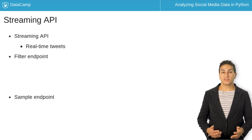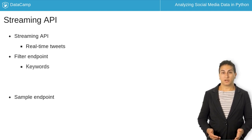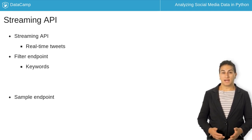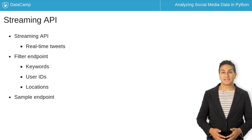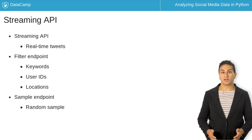With the filter endpoint, you can request data on a few hundred keywords, a few thousand usernames, and 25 location ranges. With the sample endpoint, Twitter will return a 1% sample of all of Twitter.